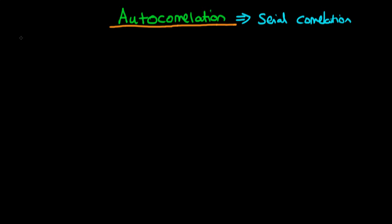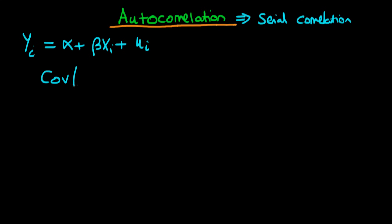So what does it actually mean to have autocorrelated errors? Well, imagine I have some regression model: y_i equals alpha plus beta x_i plus some error u_i. Serially correlated errors means that there is some covariance between u_i and some other error u_s which does not equal zero for some i which does not equal s.